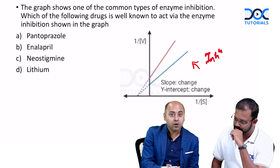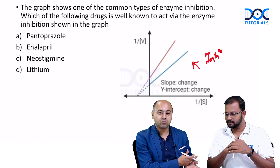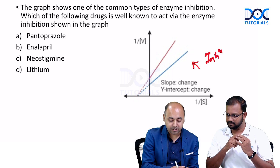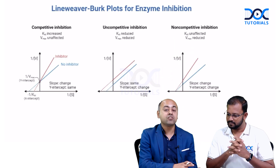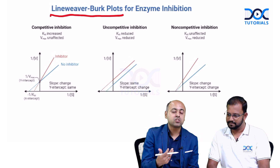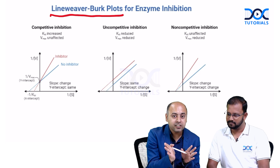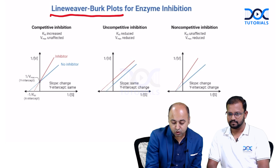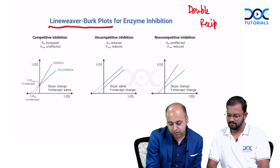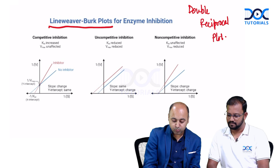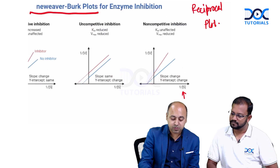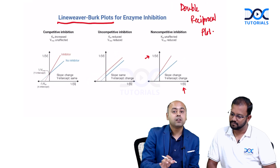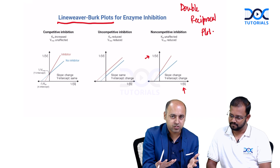I'll quickly talk about the different types of enzyme inhibition and then hand over to Dr. Nilesh Raj, who will discuss the drugs and what type of inhibition they follow. The graph shown is the Lineweaver-Burk plot, also known as the double reciprocal plot, commonly used to study enzyme inhibition. On the x-axis we have 1/[S] (one upon substrate concentration), and on the y-axis we have 1/V (one upon velocity) — hence the name double reciprocal plot.